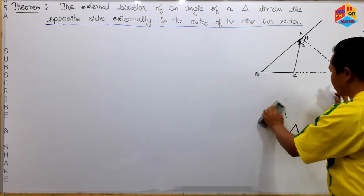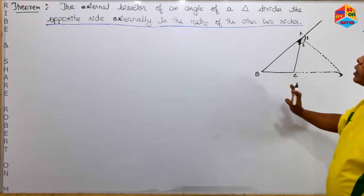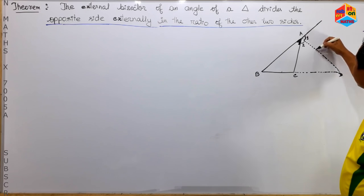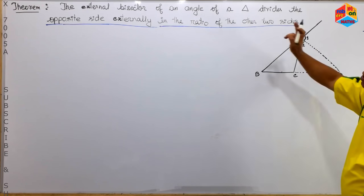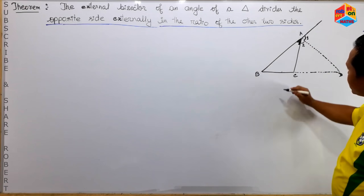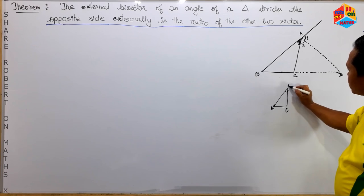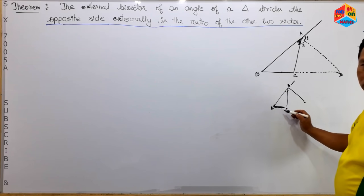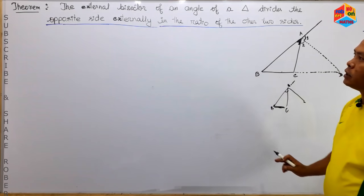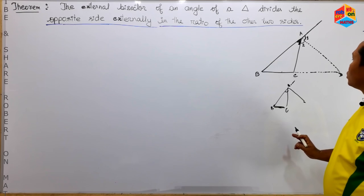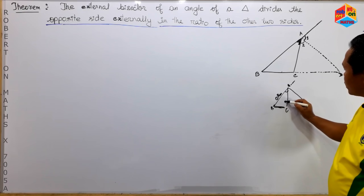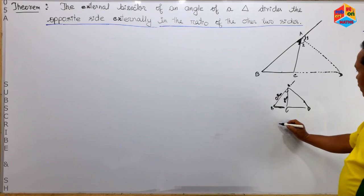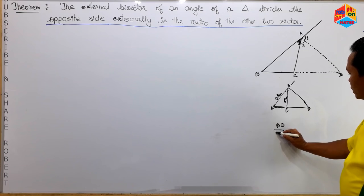What is this? If you have an external bisector, it is an external bisector. If you have an external bisector, you can see the opposite side. The opposite side is externally divided in the ratio of the other two sides. This is the ratio of the other two sides. According to the other side, we say the opposite side is divided in the ratio of the other two sides.